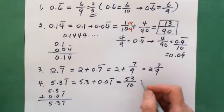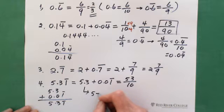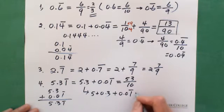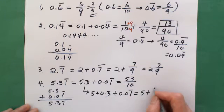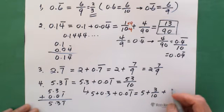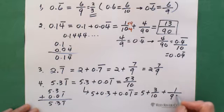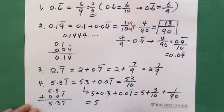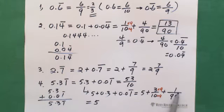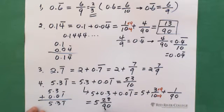Alternatively, you can write it as 5 plus 0.3 plus 0.01 repeating. Then 0.3 is 3 tenths, and 0.01 repeating: since 1 is a one-digit repeating decimal the denominator is 9, and because of the leading zero it's divided by another 10, so it's 1 over 90. Add these three together: the 5 stays as the whole number, and for 3 over 10 plus 1 over 90, the common denominator is 90. Multiply 9 to top and bottom of the first fraction: 27 plus 1 is 28, giving you 28 over 90. So you have 5 and 28 over 90.